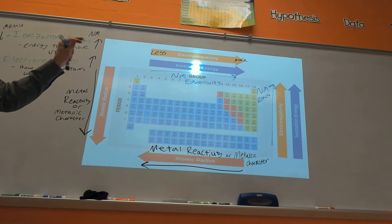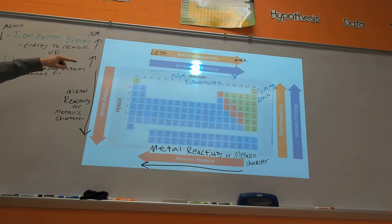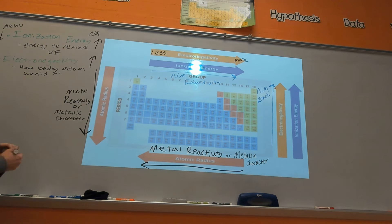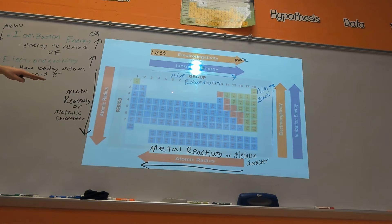There's a lot going on in this slide — I'll go through these one at a time. As you go from left to right, atoms get more electronegative. Electronegativity is how badly an atom wants electrons. The same trend holds going from bottom to top. Ionization energy — the energy needed to remove a valence electron — also increases from left to right and from bottom to top. These are opposite to metal reactivity.